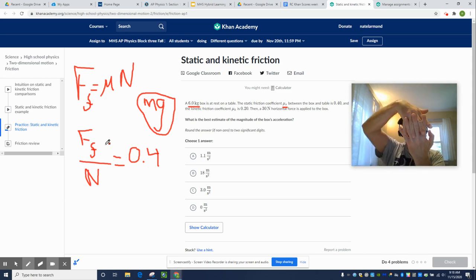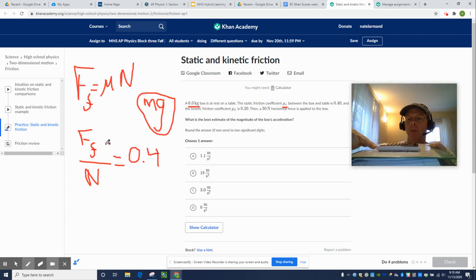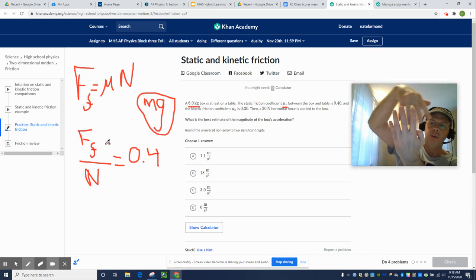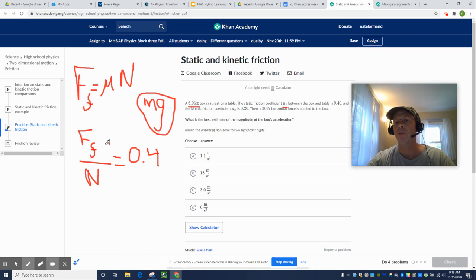Friction is just sort of interference between the two surfaces. This notebook looks smooth. It is not. It has little mountains and valleys if you zoom into a microscopic scale. And this calculator looks smooth, but it is not also. So, when you push horizontally, these little mountains and valleys interfere with each other. And that's really what friction is.